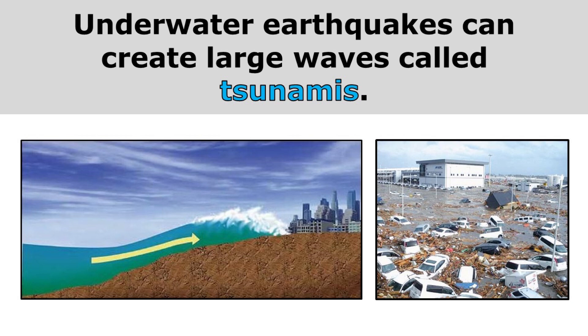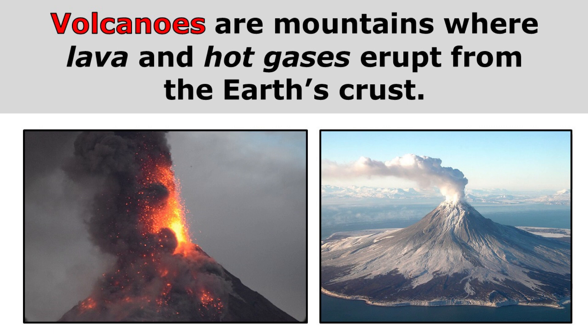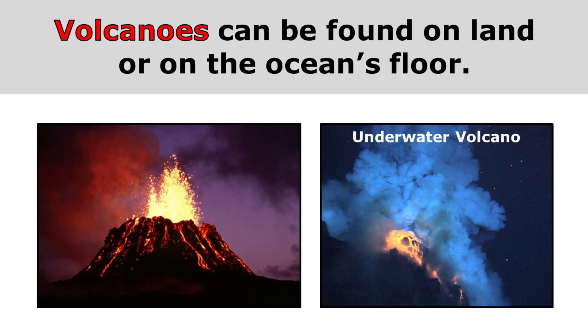Volcanoes are mountains where lava and hot gases erupt from the earth's crust. On the left is a picture of a volcano that probably looks like what you think of when you think of volcanoes, but on the right is a picture of an underwater volcano. Volcanoes can be found on land or on the ocean floor.